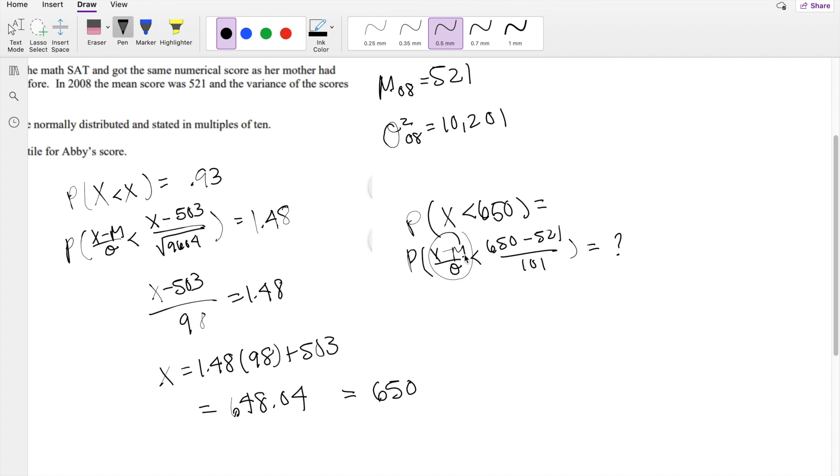This is exactly the definition of z. So what is the probability z is less than 650 minus 521, divided by 101? So what is the probability z is less than 1.2772?